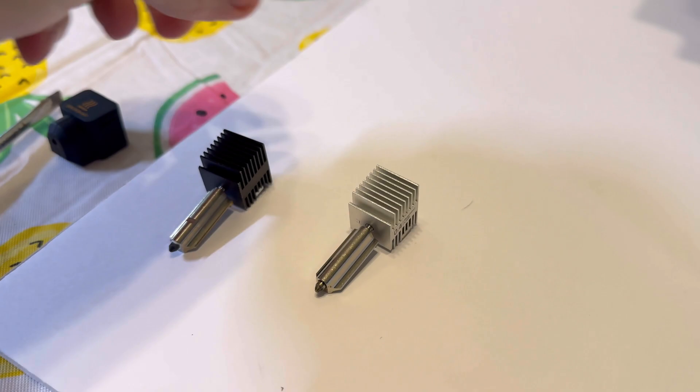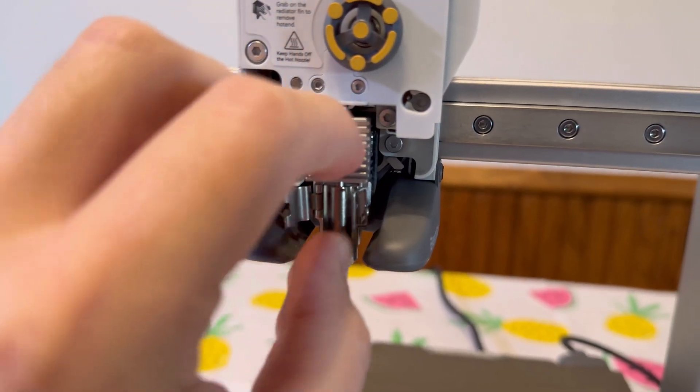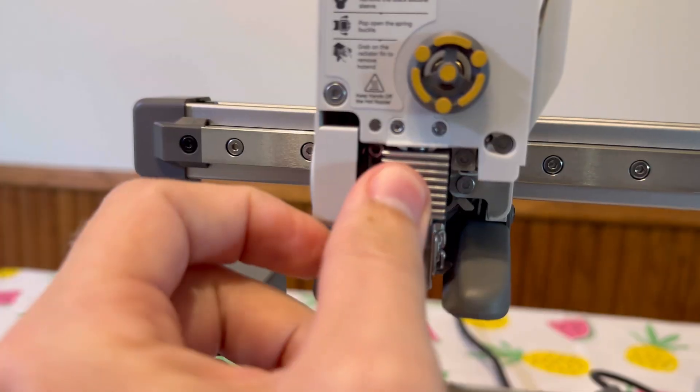And then all we have to do is put the new nozzle in exactly how we removed it. It should just click right back in there like so.